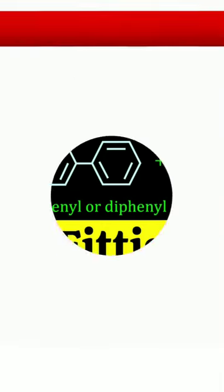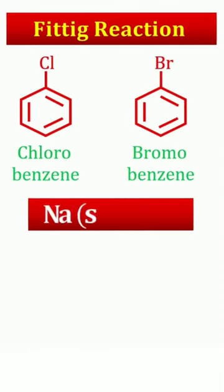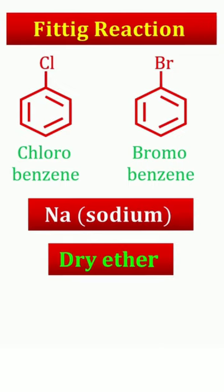Fittig reaction: When aryl halides are treated with sodium in dry ether, diaryl compounds are produced. This reaction is known as the Fittig reaction.